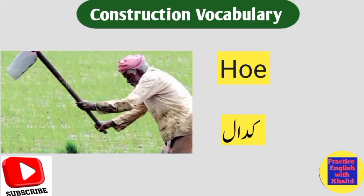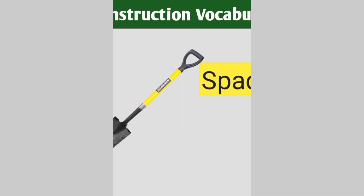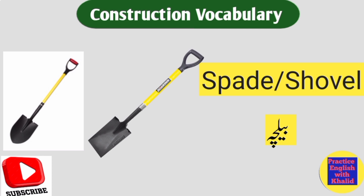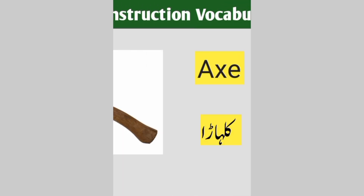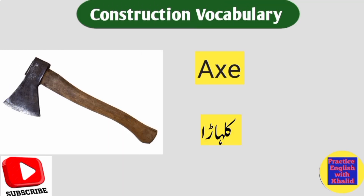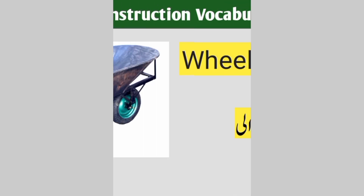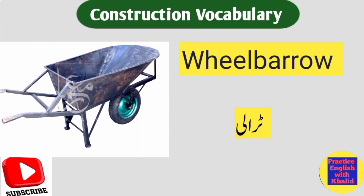Hoe — Kodaal. Spade / Shovel — Belcha. Haora. Ax — Kulhara. Wheelbarrow — Trolley.